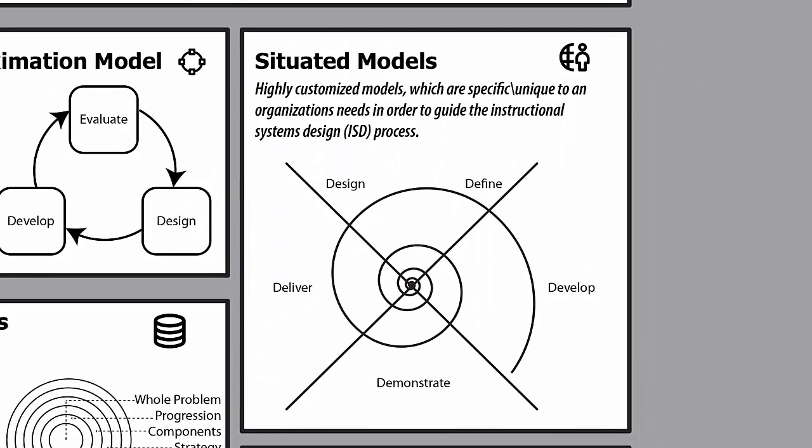With time, designers found that ADDIE and other general models often presented somewhat of a rigid structure to the design process, and some could not adapt their work to those more general models. They found a need to transform the general models into approaches which were more geared toward their own organization. Thus, situated models of instructional design took shape. These types of models considered the situation in which the design process is going to take place, and they modified and customized their model accordingly. Here we see one example of what a situated model of instructional design might look like.